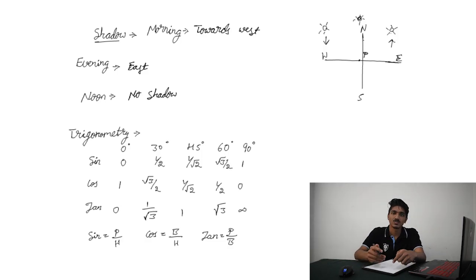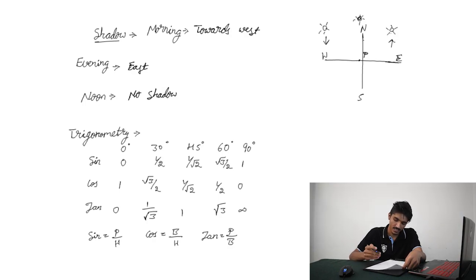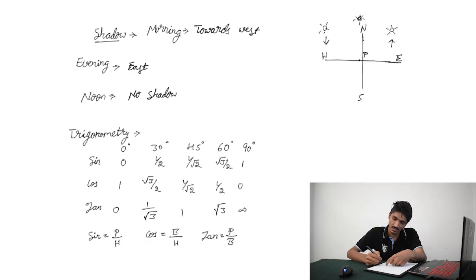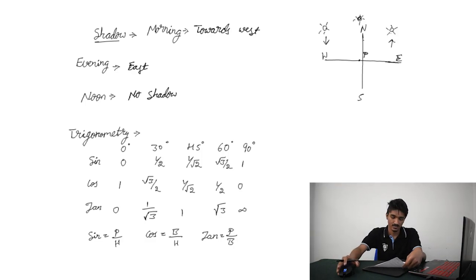One more thing you must know before solving questions is trigonometric equations — that is sine, cosine and tangent. Sine is perpendicular by hypotenuse, cosine is base by hypotenuse, and tangent is perpendicular by base. Keeping all this in mind, we must move on to the questions.